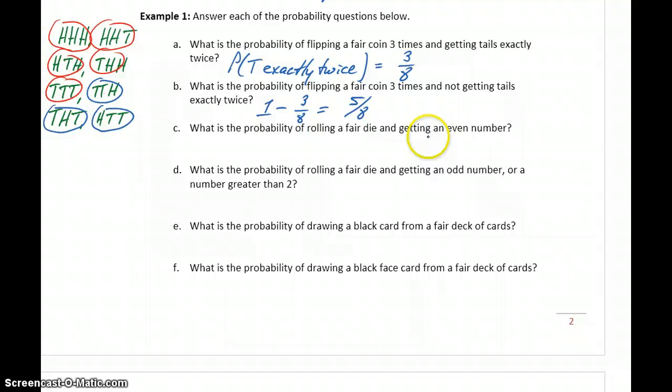In part c, what's the probability of rolling a fair die and getting an even number? So if we again look at our sample space we can get a one, two, three, four, five, or six. And what we're interested in are the even numbers. So in this case two, four, and six. So our probability is three out of six or one half, 50%.